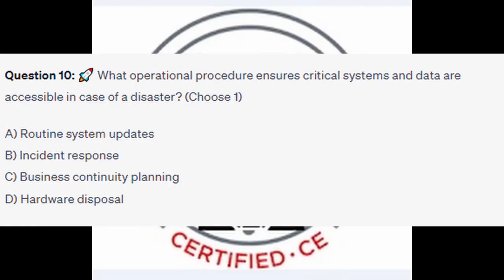Question number 10: what operational procedure ensures critical systems and data are accessible in case of a disaster? Choose one. Is it A, routine systems updates? Is it B, incident response? Is it C, business continuity planning? Or is it D, hardware disposal?